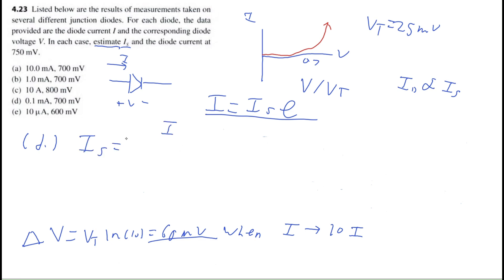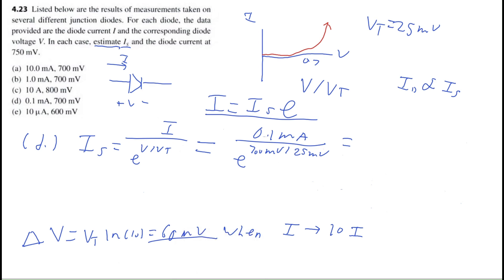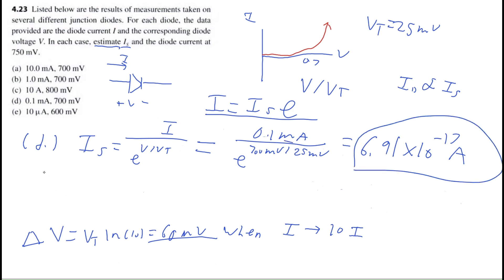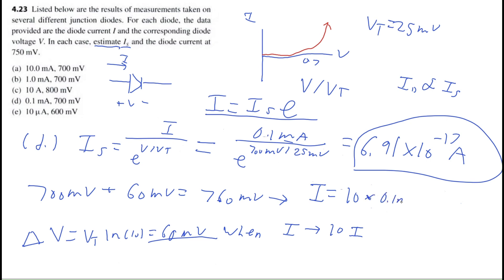Part D: The source current equals diode current divided by E to the power of diode voltage divided by thermal voltage. The diode current is 0.1 milliamps, the diode voltage is 700 millivolts, and the thermal voltage is 25 millivolts. That gives 6.91 times 10 to the negative 17 amps. For the diode current at 750 millivolts — we're at 700 millivolts, so adding 60 millivolts gets us to approximately 760 millivolts, meaning we multiply by 10: 10 times 0.1 milliamp equals 1 milliamp.